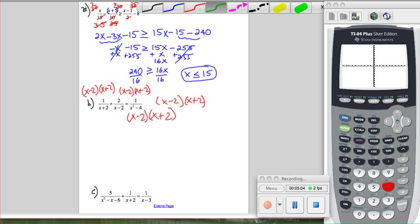So here this whole thing cancels. Here the x plus 2's cancel, and here the x minus 2's cancel. So one times x minus 2 is x minus 2, plus 2 times x plus 2, and here the only thing that's left is 1.